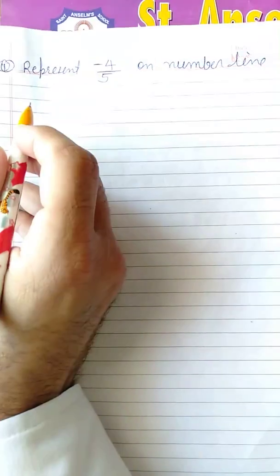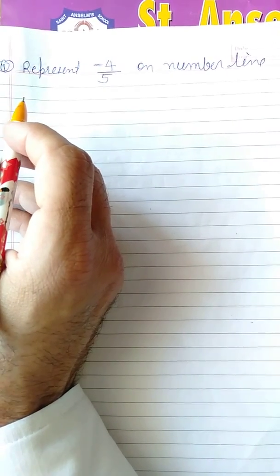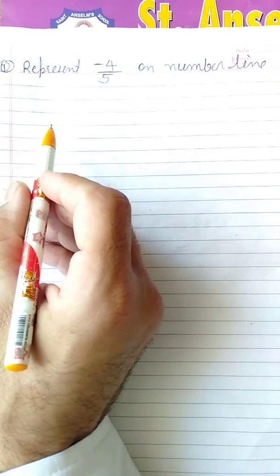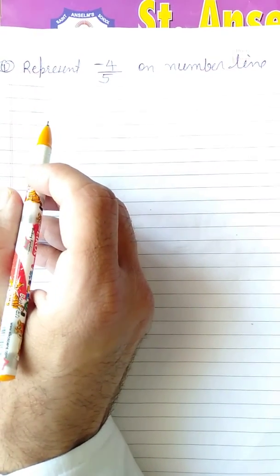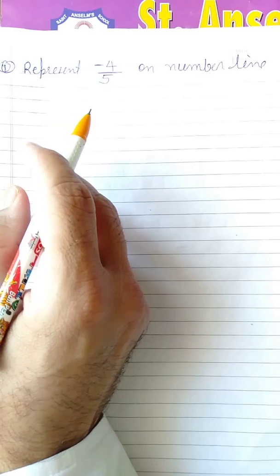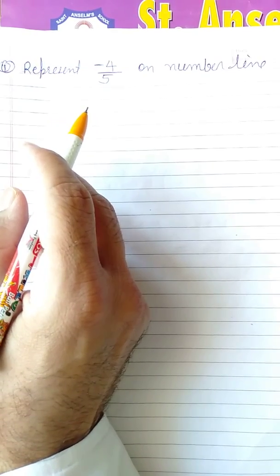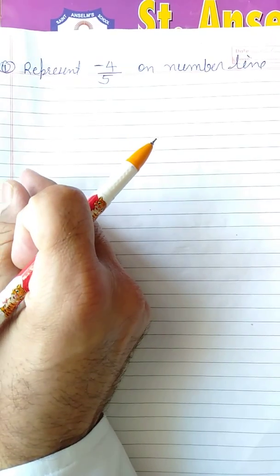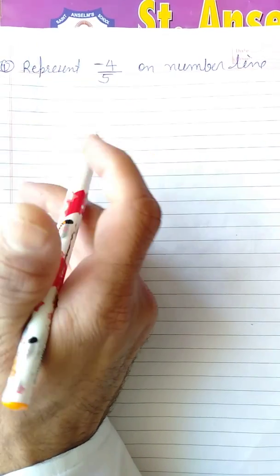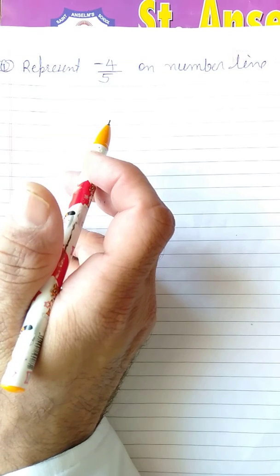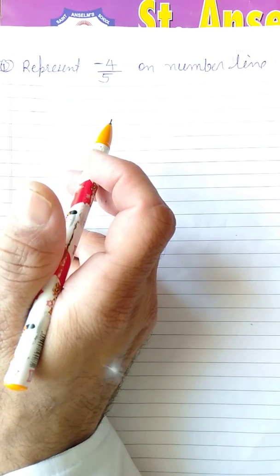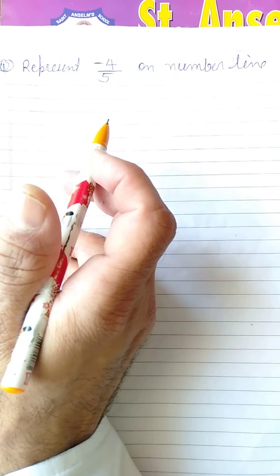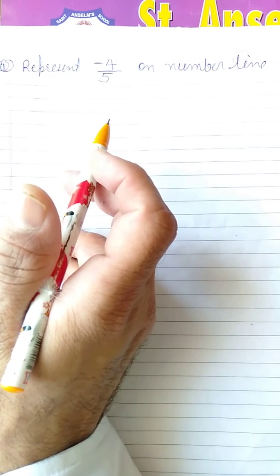Dear students, in previous videos we have learned rational number arrangement in ascending and descending order, properties of rational numbers including closure property, commutative property, associative property, distributive property, additive inverse, multiplicative inverse, additive identity, multiplicative identity, rational numbers between two numbers, and representation of rational numbers.